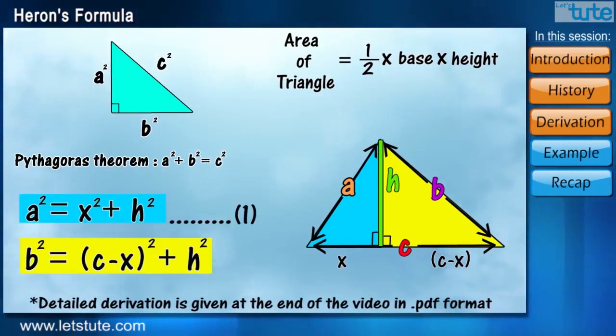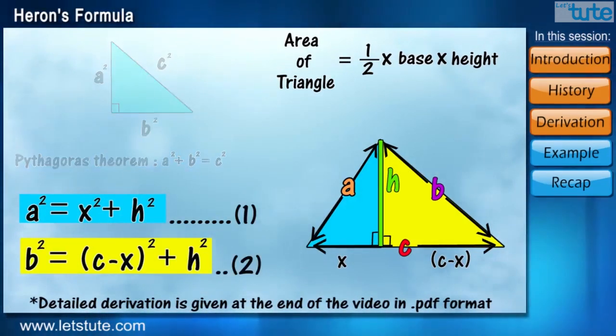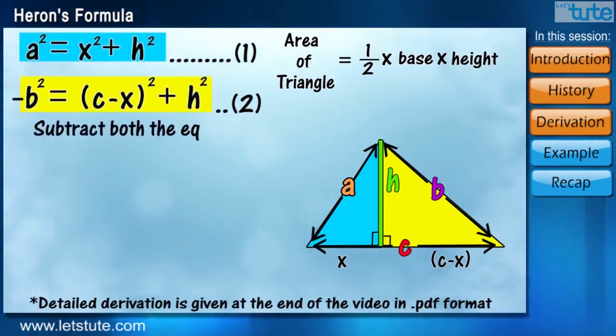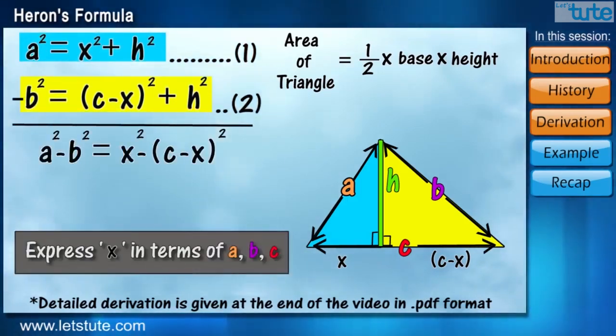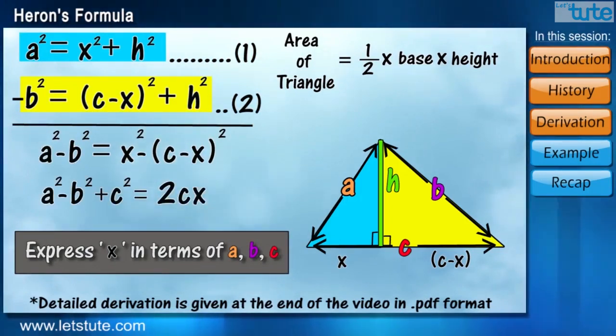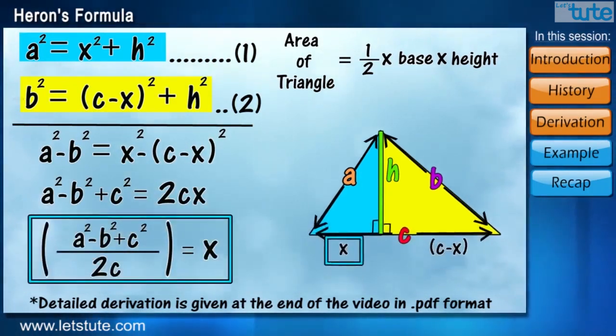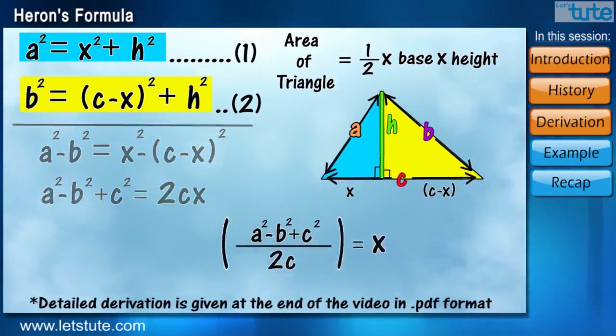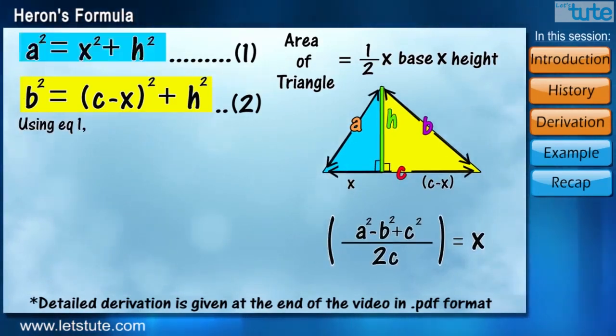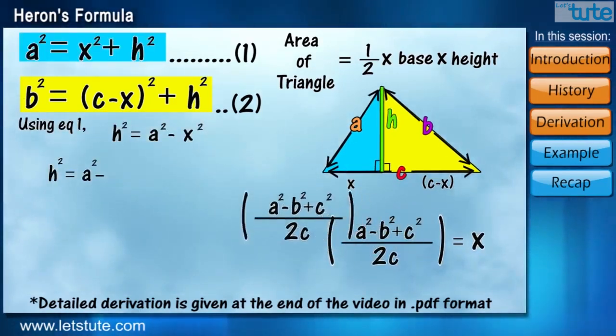So, let's apply Pythagoras theorem in both these triangles. Now, we have equation 1 and 2. Let's subtract both the equations and get the value of x in terms of A, B and C. Now, using equation 1, we can also get the value of H.